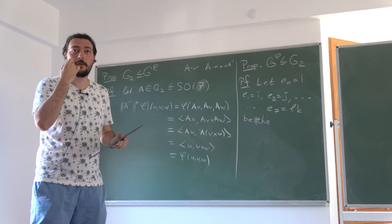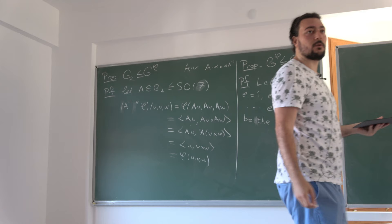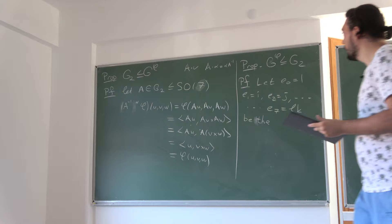So I'll stop the proof here and not complete the remaining steps. Let's just state that G^φ and G2 are equal. So instead of defining G2 as the automorphism group of the octonions, you can take this three-form — the associative calibration — and say G2 is the stabilizer group of this specific three-form. We'll also discuss in what generality we can pick an arbitrary three-form.